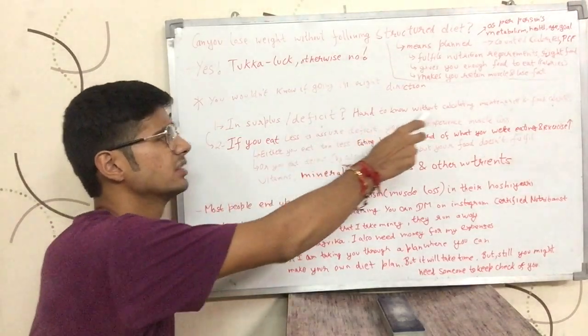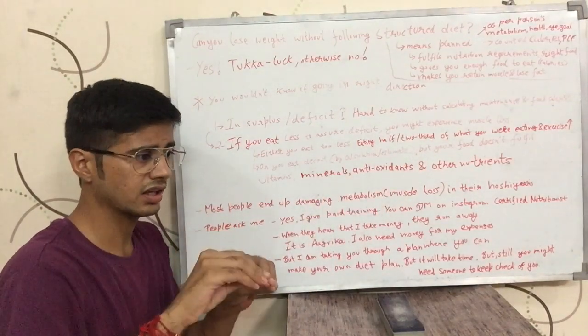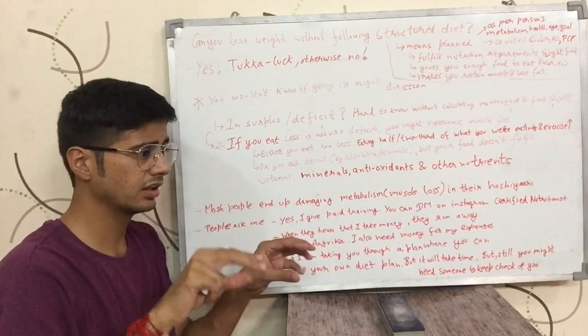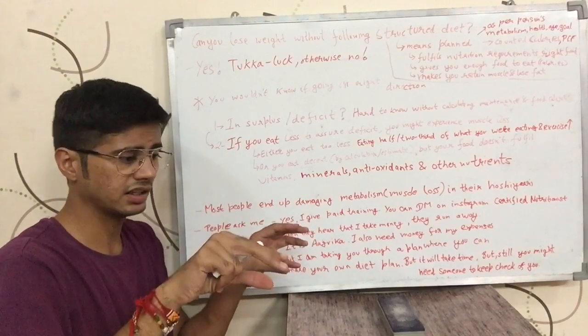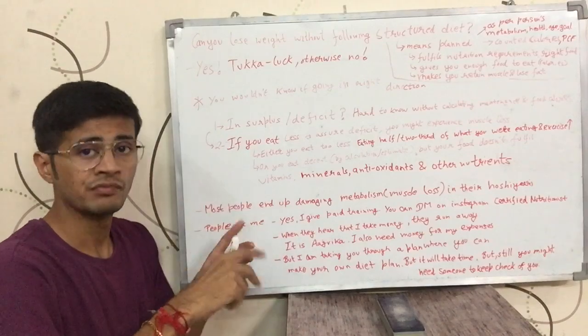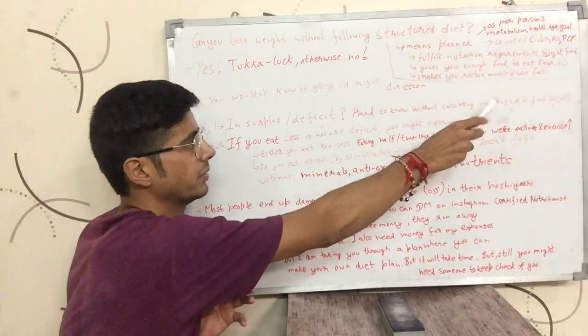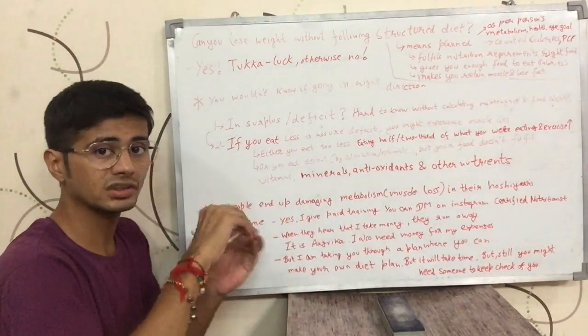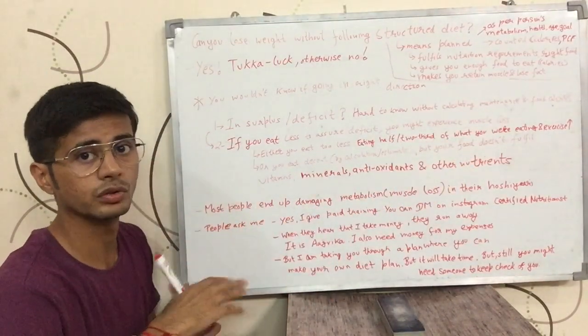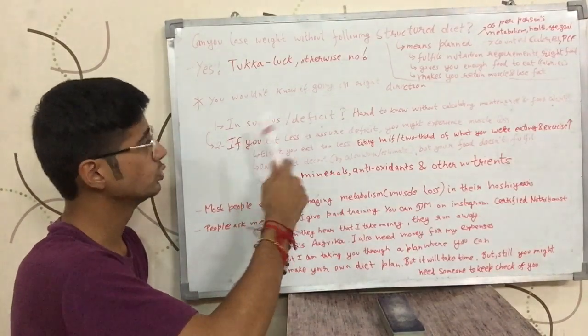You will understand when you know your maintenance calories. You will see the food and know how much of the maintenance calories are in that food. If I decrease calories, I will lose weight. If I increase, I will gain weight. You can see maintenance calories in the Indian food composition table. I've covered this in previous videos.